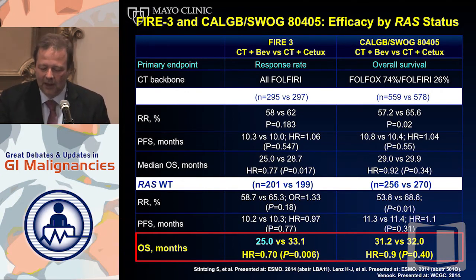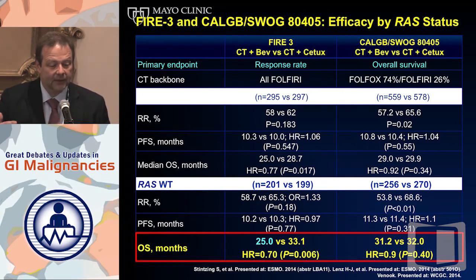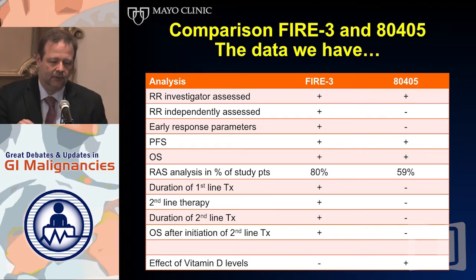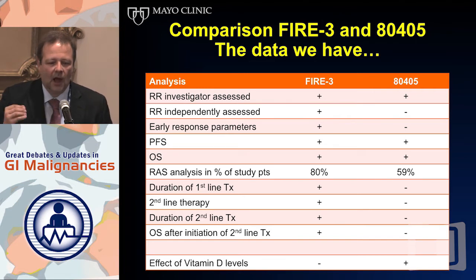When you look overall, I didn't talk too much about CALGB/80405 because Alan will talk about it, but I believe these trials are actually more similar than dissimilar. There is one outlier — the performance of FIRE-3 — and we don't know exactly why, but data will be pooled. The criticism American investigators commonly receive when talking about 80405 is: how much data do we have on the clinical study? For FIRE-3, we have investigator- and independently-assessed response, early response parameters, RAS analysis in a very high percentage of study patients, duration of first- and second-line therapy, and overall survival of second-line therapy. These parameters are largely absent in 80405, which instead spent considerable time looking at vitamin D to explain effects — and that does not help us explain the difference in overall survival.